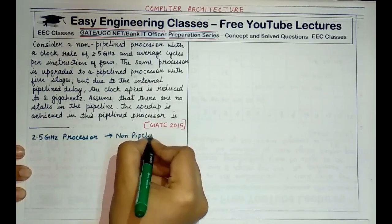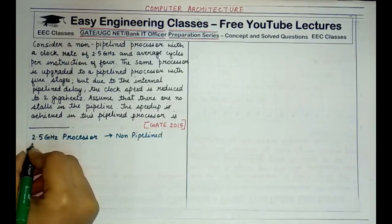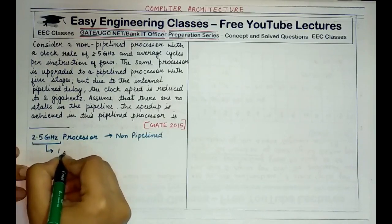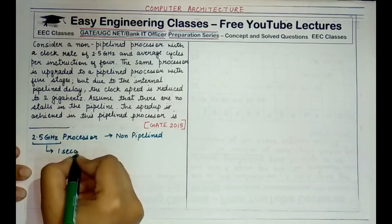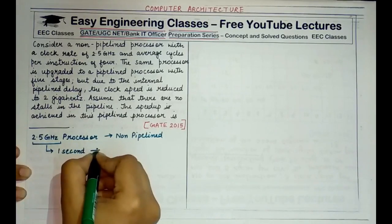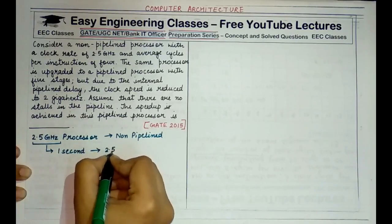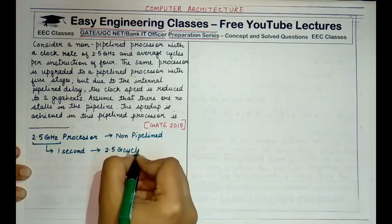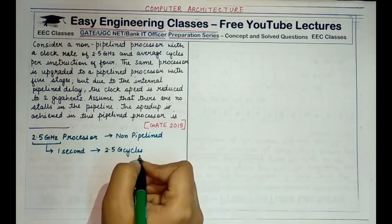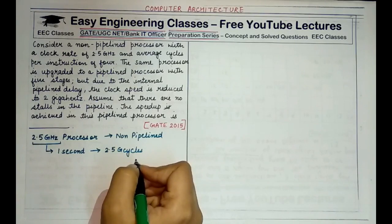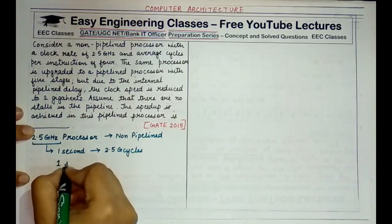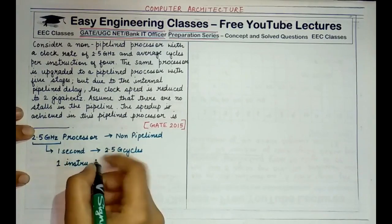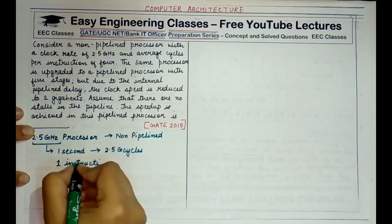This specification means that in one second, 2.5 GHz cycles are completed. Since it is given that an instruction takes 4 cycles, we write: one instruction takes 4 cycles to complete.